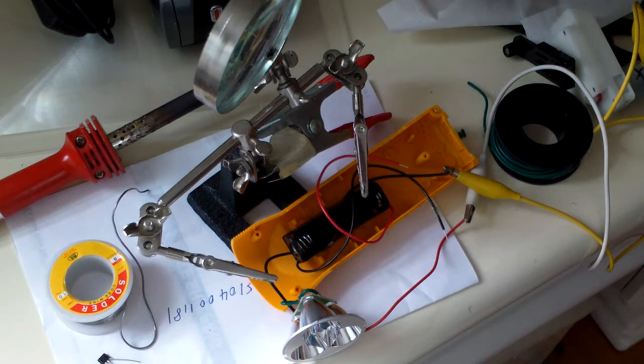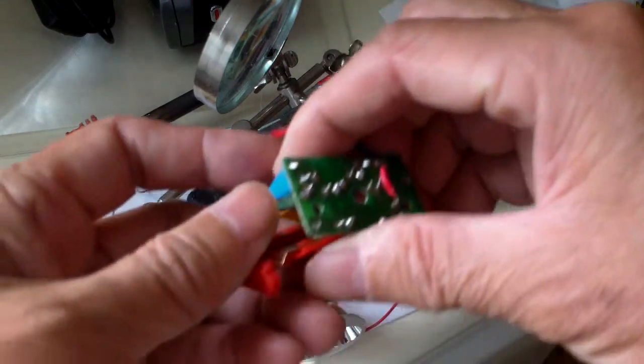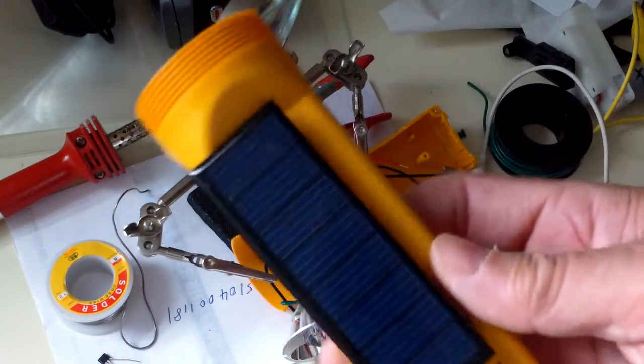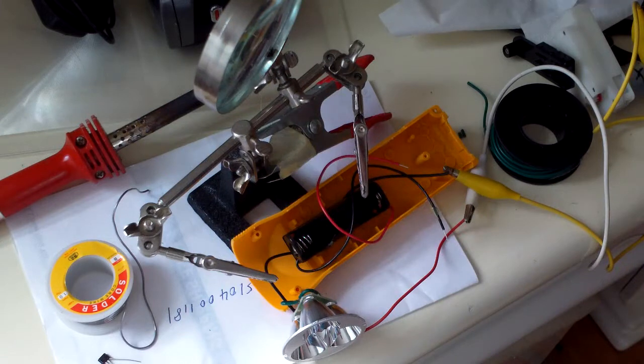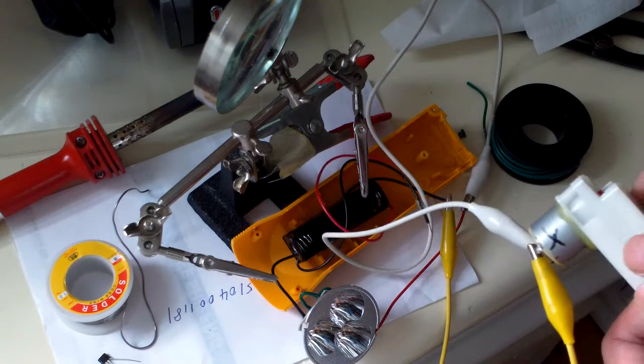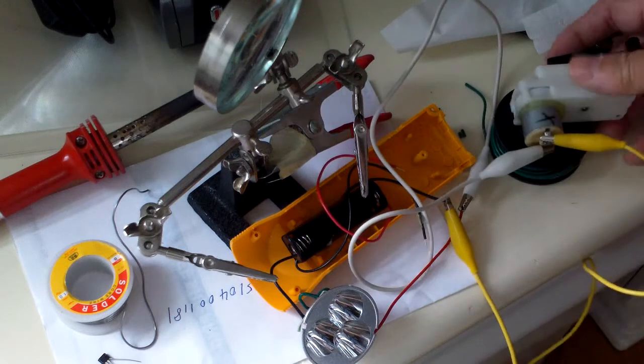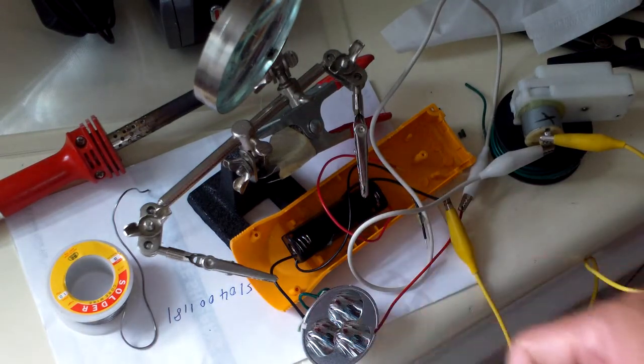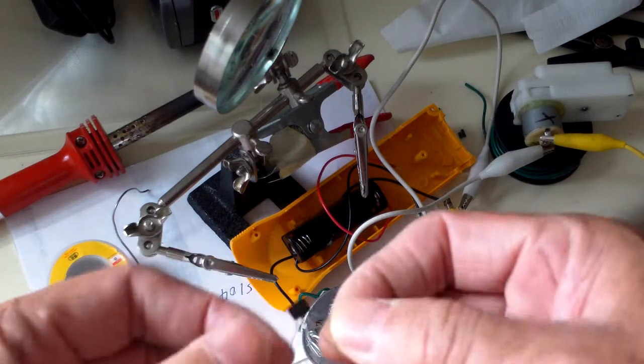So I'm going to do away with the AC recharging part of it and I'm just going to make it solar rechargeable. The generator here will be charging one AA battery and the battery will in turn power the LED lights.